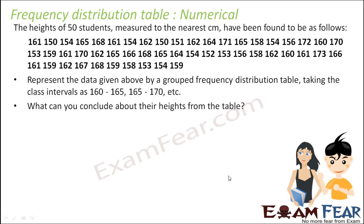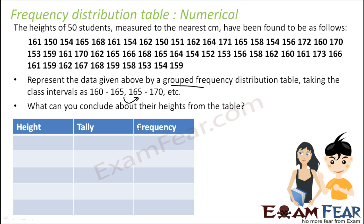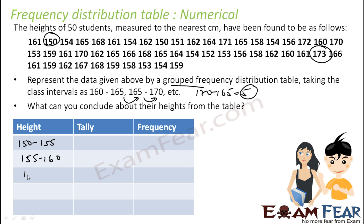Let us take one more example. The heights of 50 students are given. We have to represent this data in a grouped frequency distribution table. In this case it is overlapping — the upper limit of one class matches the lower limit of the next. The minimum height is 150 and the maximum is around 172–173. The class size, based on the sample class of 165–170, is 5. So our classes will be: 150–155, 155–160, 160–165, 165–170, and 170–175.